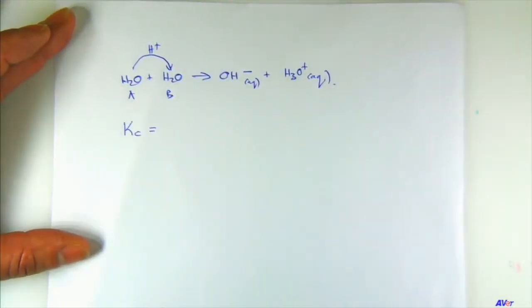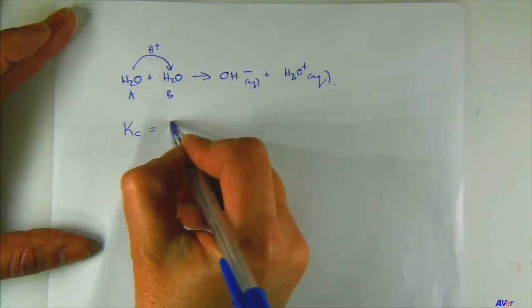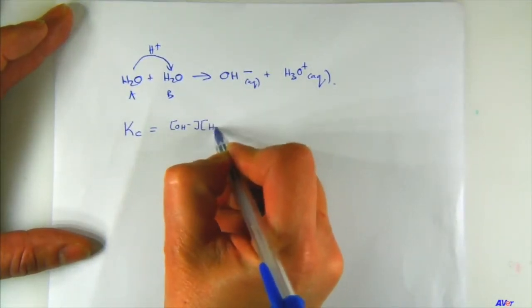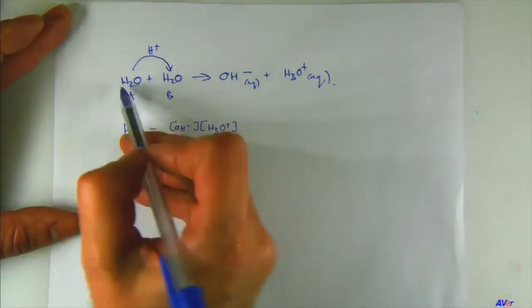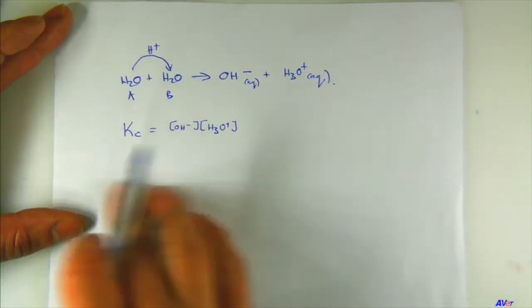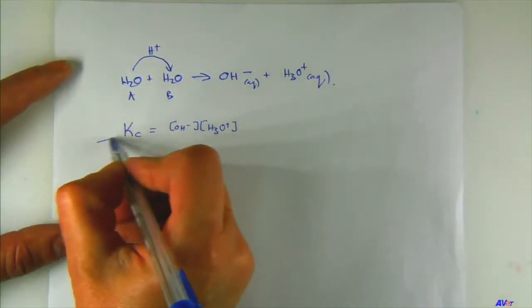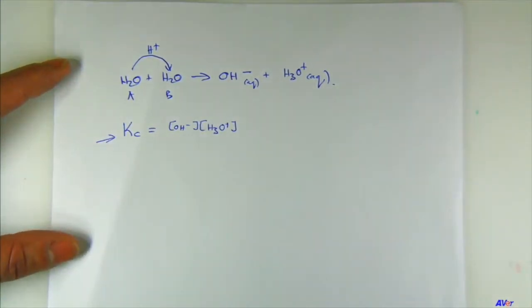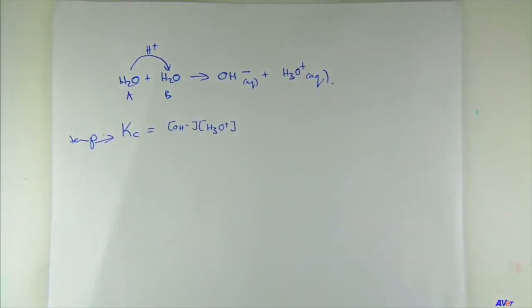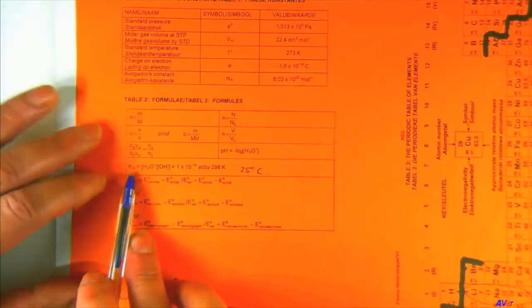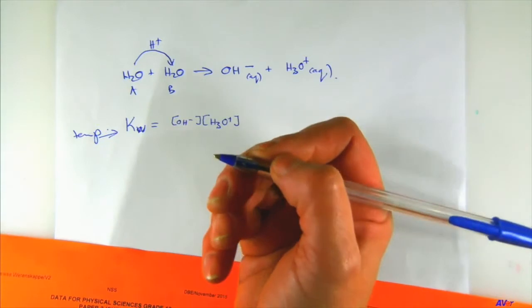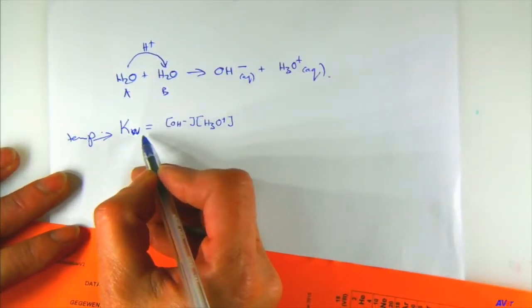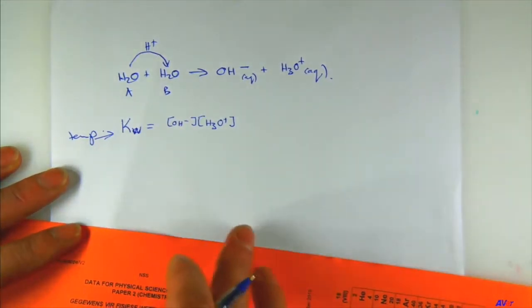The Kc expression for autoprotolysis is: Kc = [OH⁻][H₃O⁺], divided by nothing — because the water molecules are pure liquids and don't appear. From Monday's work, we know Kc changes only with temperature. On your orange information sheet, this special equilibrium constant is written as Kw, where the 'w' stands for water.